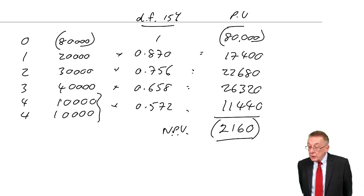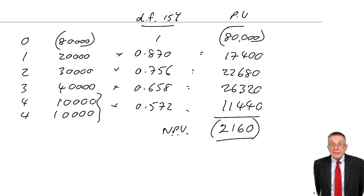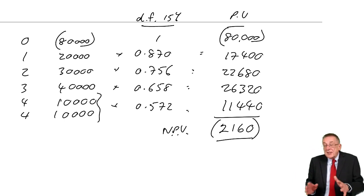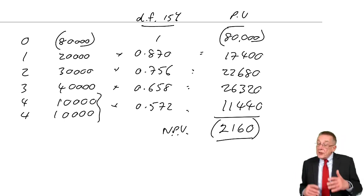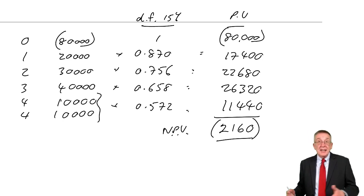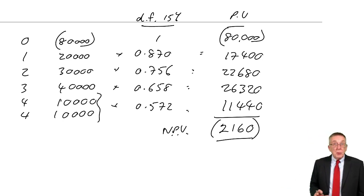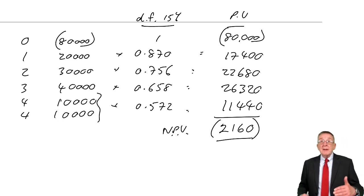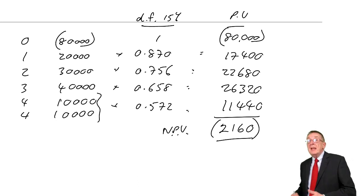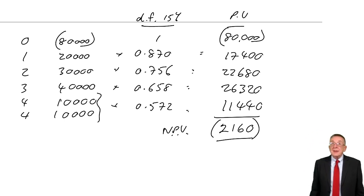I wanted an NPV of zero. The internal rate of return by definition is when the NPV is zero. Well we knew it was more than 10%, but it's not as high as 15, it's going to be somewhere between them. And what you could do is keep on guessing. Let's try 12%, depending on whether that's plus or minus, let's try 13 and so on. But in the exam, no.